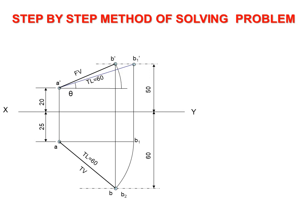Rotate the final front view a'b' by taking a' as center and a'b' as radius to get the intersecting point b2' on the line drawn from a'.